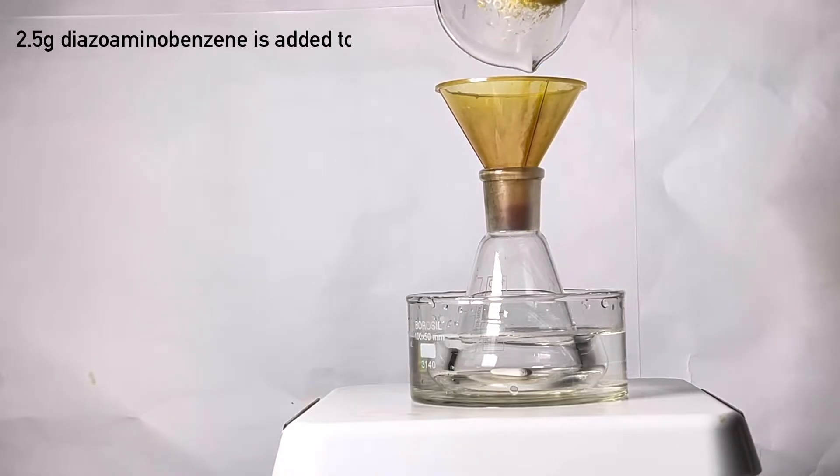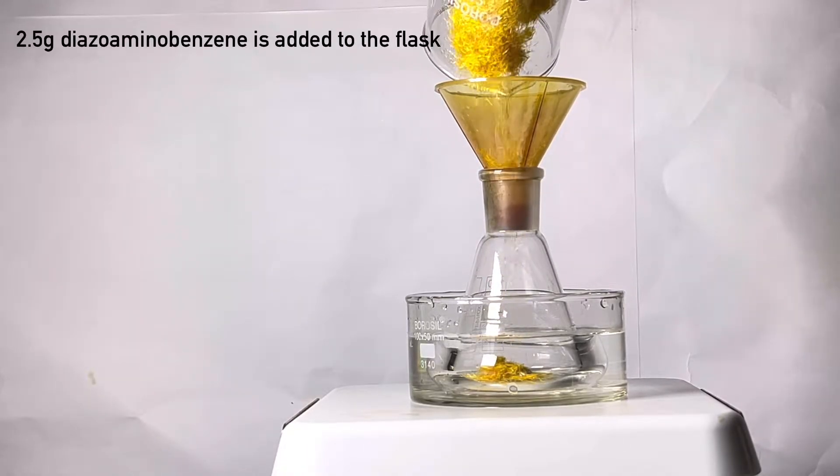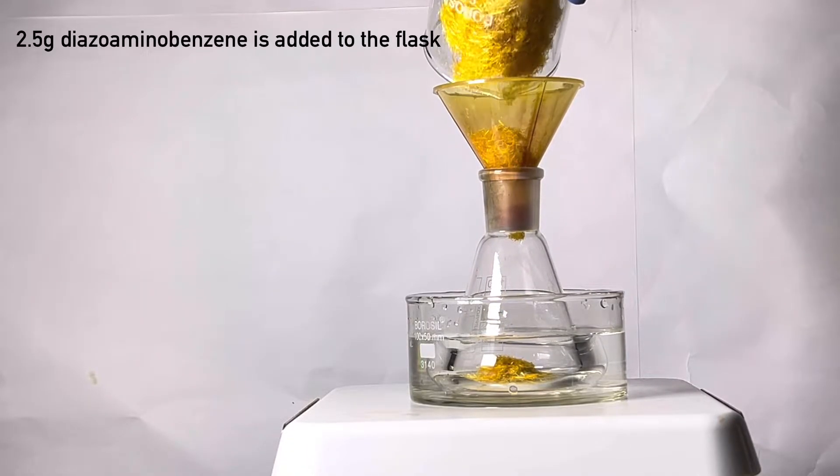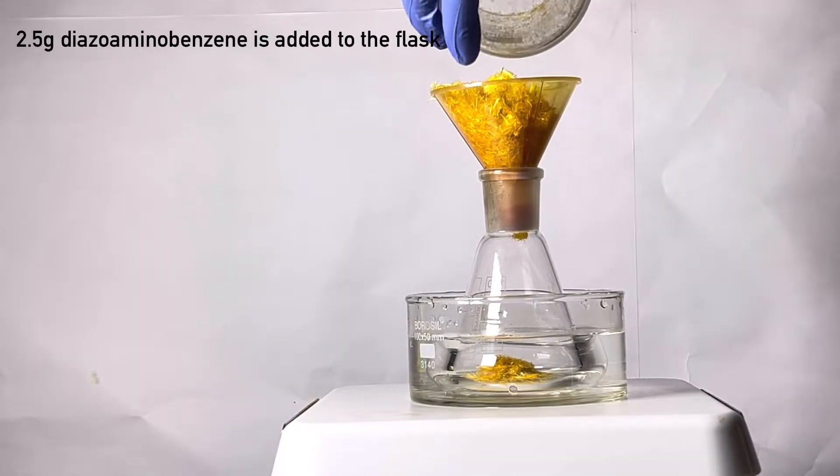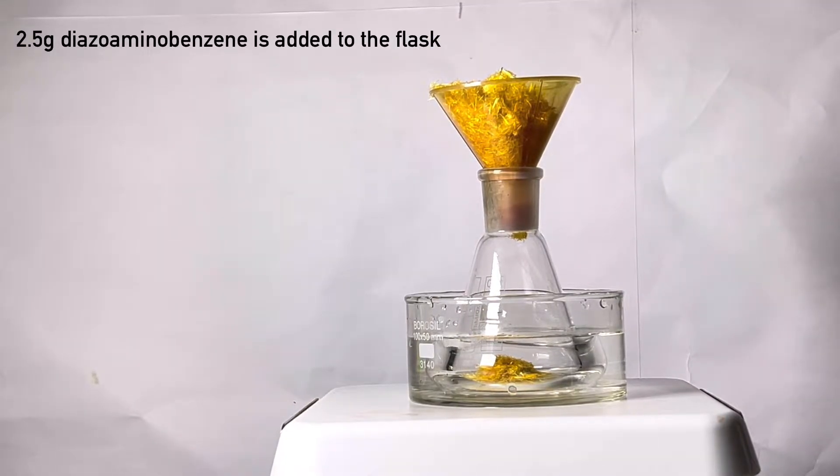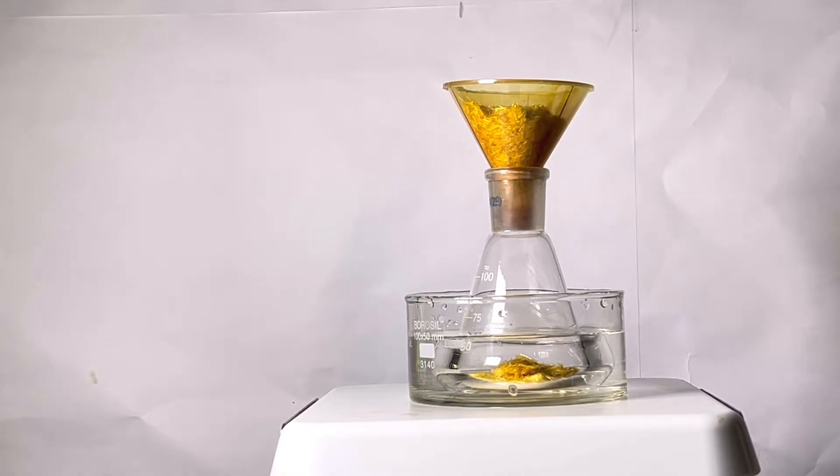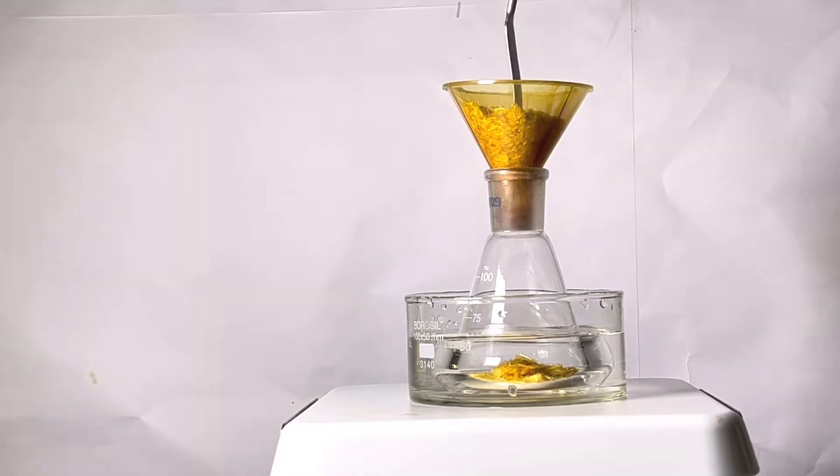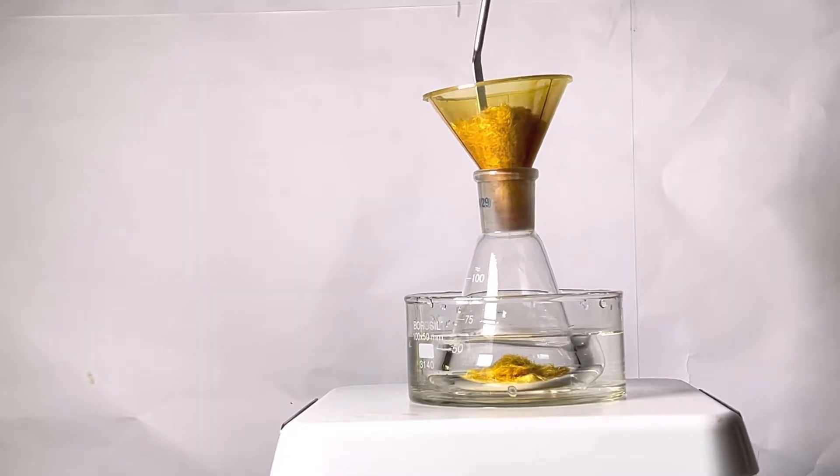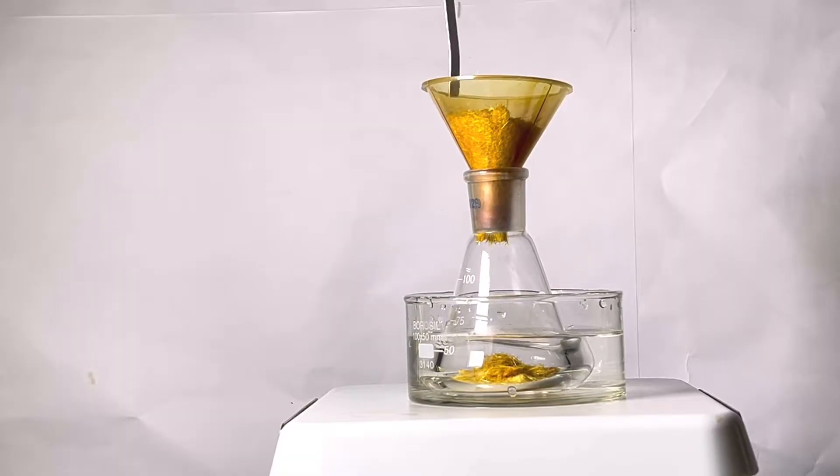A funnel was placed on top and 2.5 grams of diazoaminobenzene was transferred to it. Diazoaminobenzene was synthesized in one of my previous videos and the link is given in the description. As you can see, due to the larger crystal size, the diazoaminobenzene got stuck in the funnel, and I had to use a spatula to poke it and push it down into the flask.